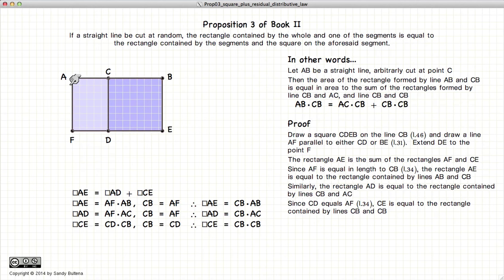Now this light purple rectangle AD is equal to AC times AF, or AC times CB. And this rectangle CE is equal to CB all squared, since that's how we drew it.